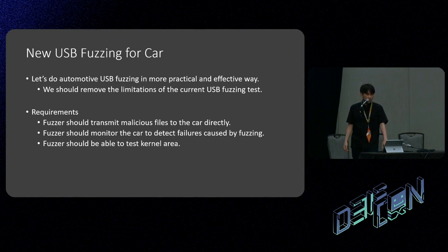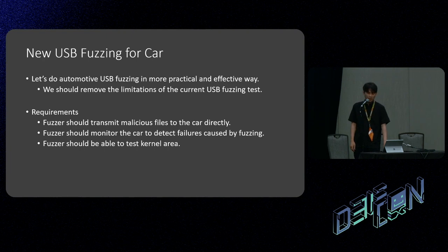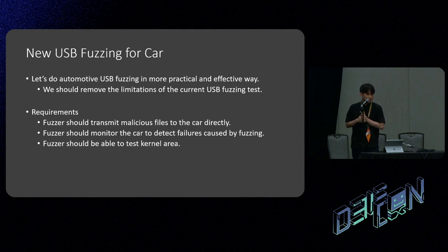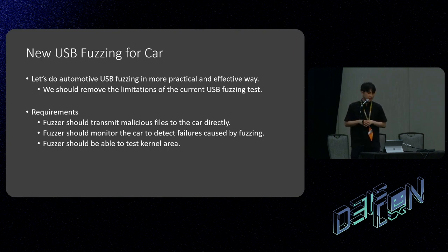What are the requirements of the new fuzzing method? First, the fuzzer should transmit malicious files to the car directly. Second, the fuzzer should monitor the car to detect failures caused by fuzzing. Third, the fuzzer should be able to test the kernel area. The second requirement is difficult to completely satisfy in some cases because it's black box fuzzing — we cannot monitor the inside of the car. But we try to suggest the best ways to detect failures in black box fuzzing.